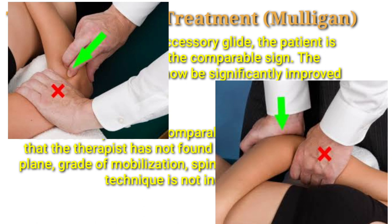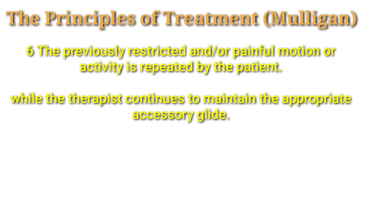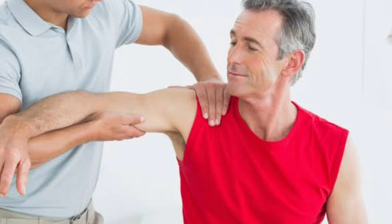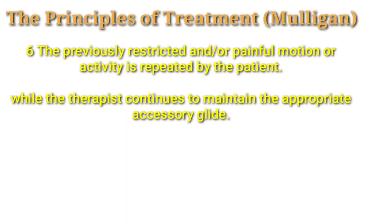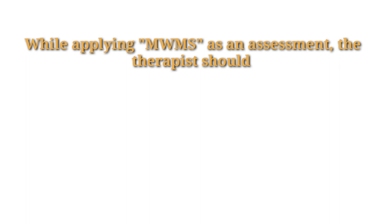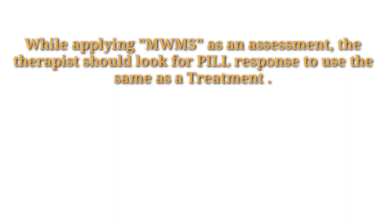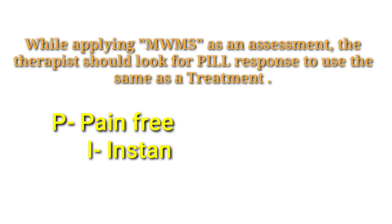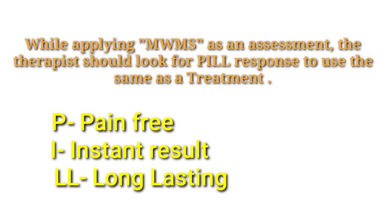Number six: any previously restricted or painful motion or activity that the patient could not perform should improve while the therapist continues to maintain the appropriate accessory glide. When applying mobilization with movement, we look for the PILL response — pain-free, instant results, and long lasting. Mulligan said that we need a treatment that is pain-free, gives instant results, and is long lasting.